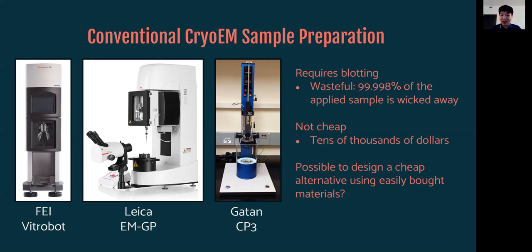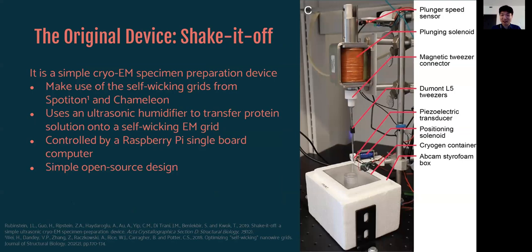So what John, my PI, had the idea of doing is, is it possible to design a cheap alternative to all these commercial devices using easily available materials, for example, Amazon. So actually, it is possible. So this on the right here is a homemade vitrification device that John built, which he named Shake It Off. And it's a very simple device. And it first of all actually makes use of self-wicking grids. Grids that actually have the capacity to wick away liquids by themselves without a need for filter paper, which was pioneered by Bridget Carragher and Clint Potter's lab.